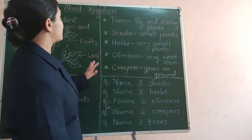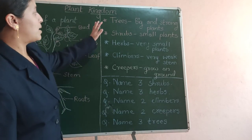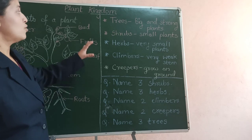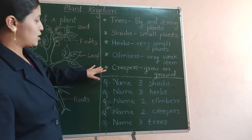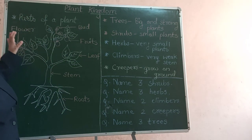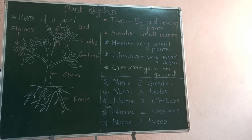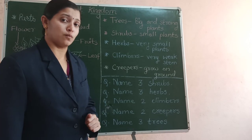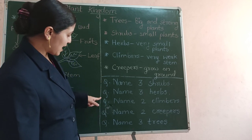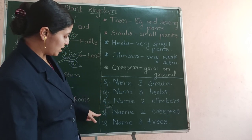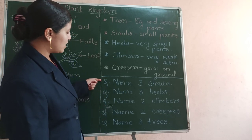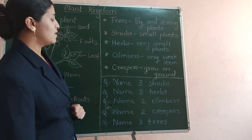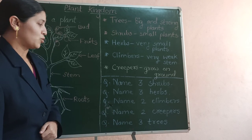This was the lesson about trees and plants. We saw various types of plants and the parts of a plant. Now it's time for homework. You have to write the answers to these 5 questions.